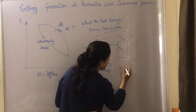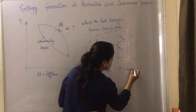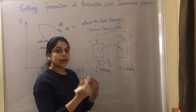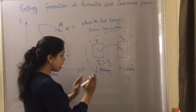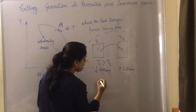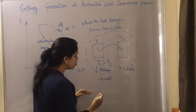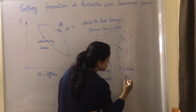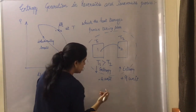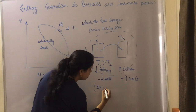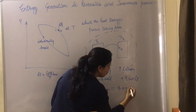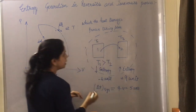Due to body 1 losing heat, its entropy decreases, and the entropy of body 2 increases. Remember: the increase in entropy is always greater than the decrease in entropy. For example, let's say the decrease in entropy of body 1 is 4 units, and the gain in entropy of body 2 is 9 units. The arithmetic sum gives the change in entropy of the system: 9 minus 4 equals 5 units.